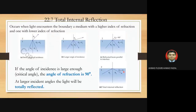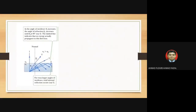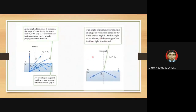At larger incident angles the light will be totally internally reflected. As angle of incidence theta one increases, angle of refraction theta two increases until theta two reaches 90 degrees — at ray four, no energy propagates through the boundary. For even larger angles of incidence, total internal reflection occurs at ray five. The angle producing refraction at 90 degrees is the critical angle theta c.